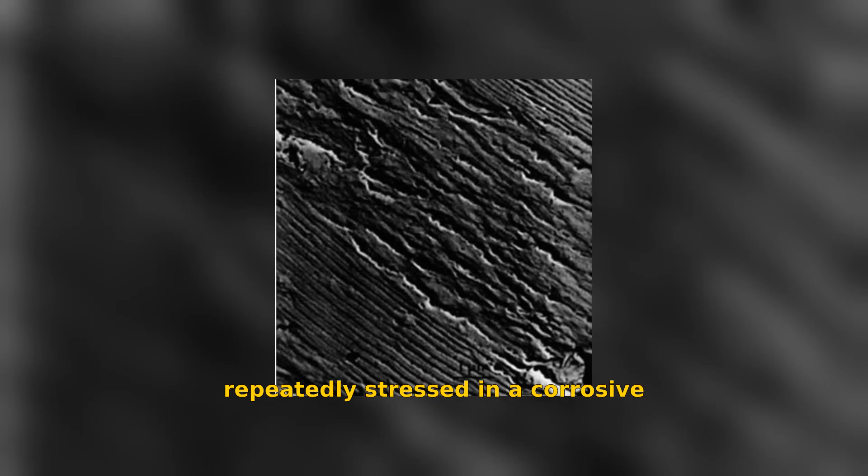Corrosion fatigue occurs when an aluminum structure is repeatedly stressed in a corrosive environment. This fatigue can initiate cracks, which may progress rapidly under the right conditions. The characteristic fatigue striations on the fracture surfaces are shown in this figure.